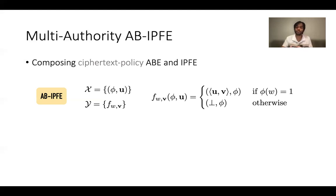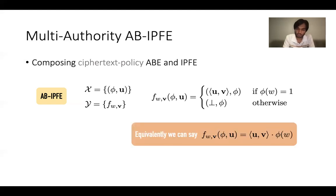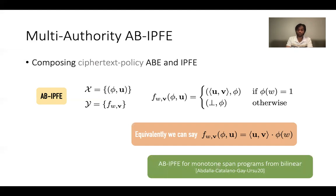AB-IPFE is more powerful than attribute-based encryption: ABE is an all-or-nothing primitive where you either learn everything or nothing. In IPFE you always learn something. Combining them gives a more fine-grained access structure — you may learn nothing, or you may learn just some partial information. Equivalently, the function computed here is the inner product of the message vector and key vector, multiplied by the predicate value. This notion was very recently studied by Abdallah et al., who proposed ABIPFE for monotone span programs from bilinear maps.